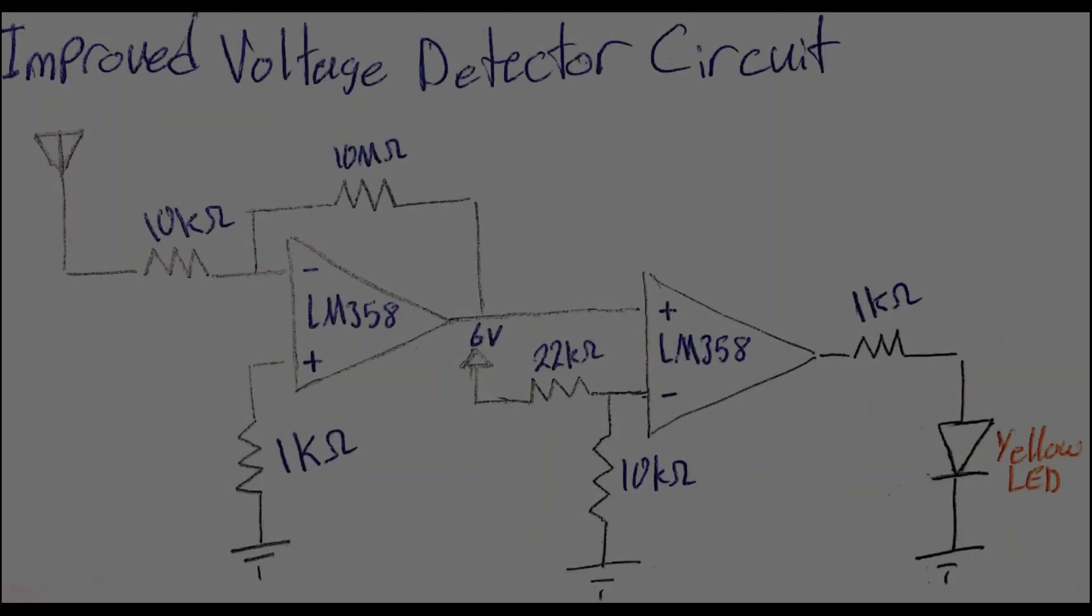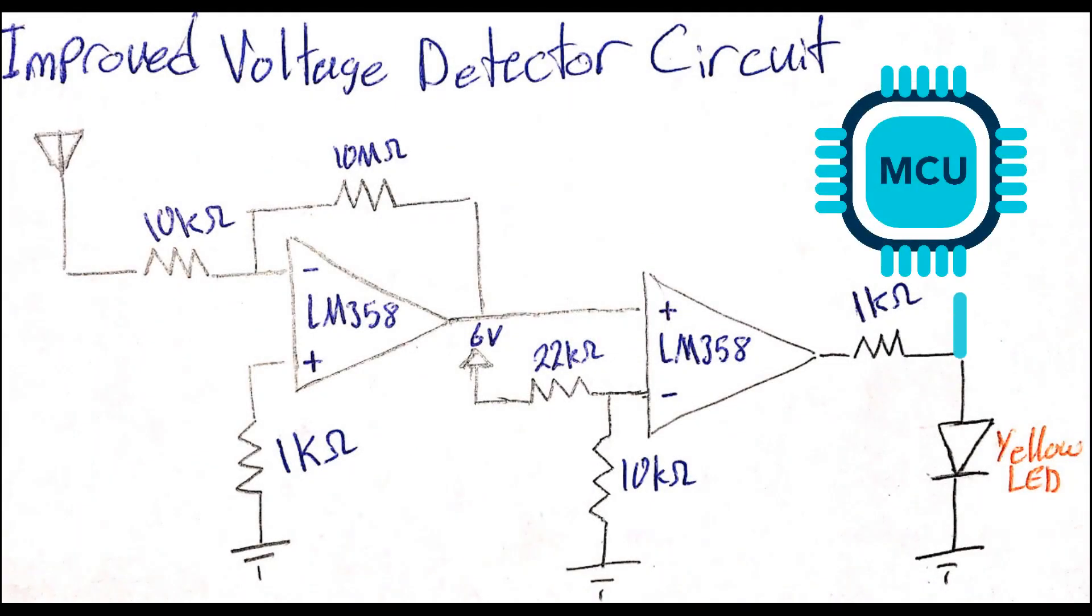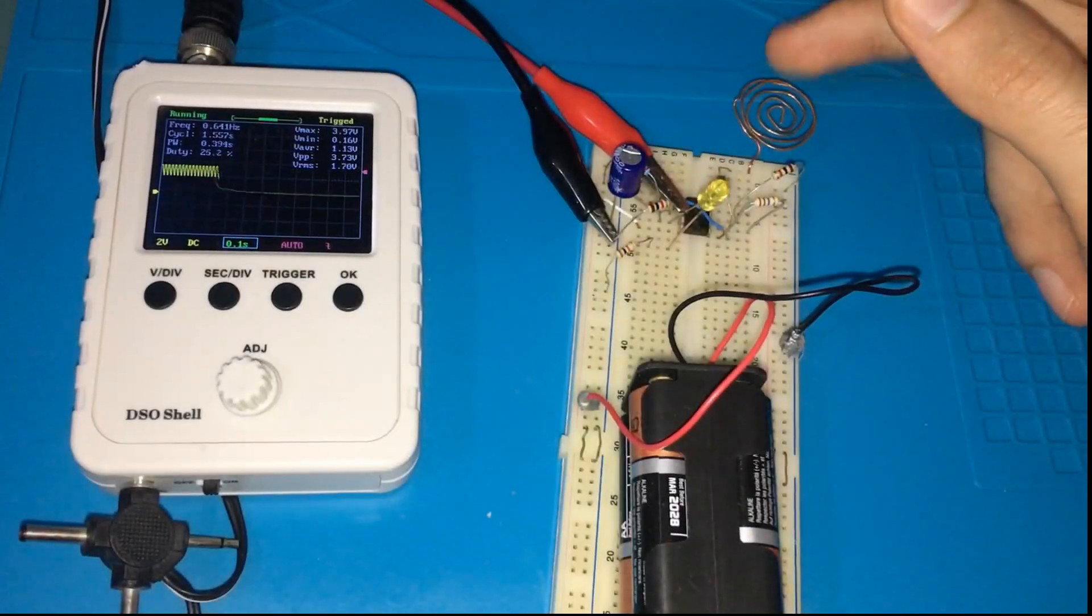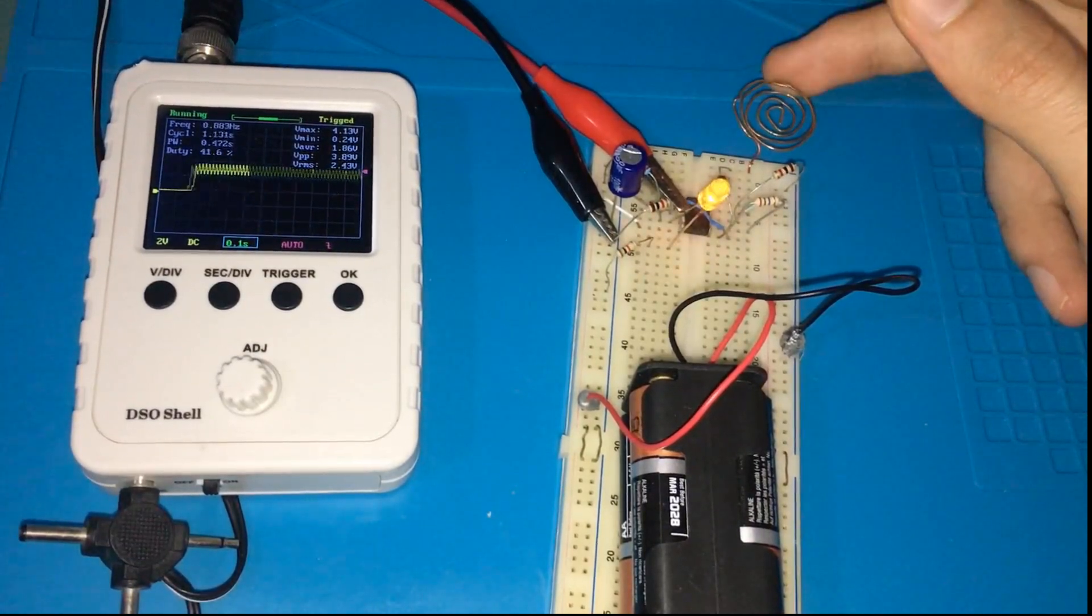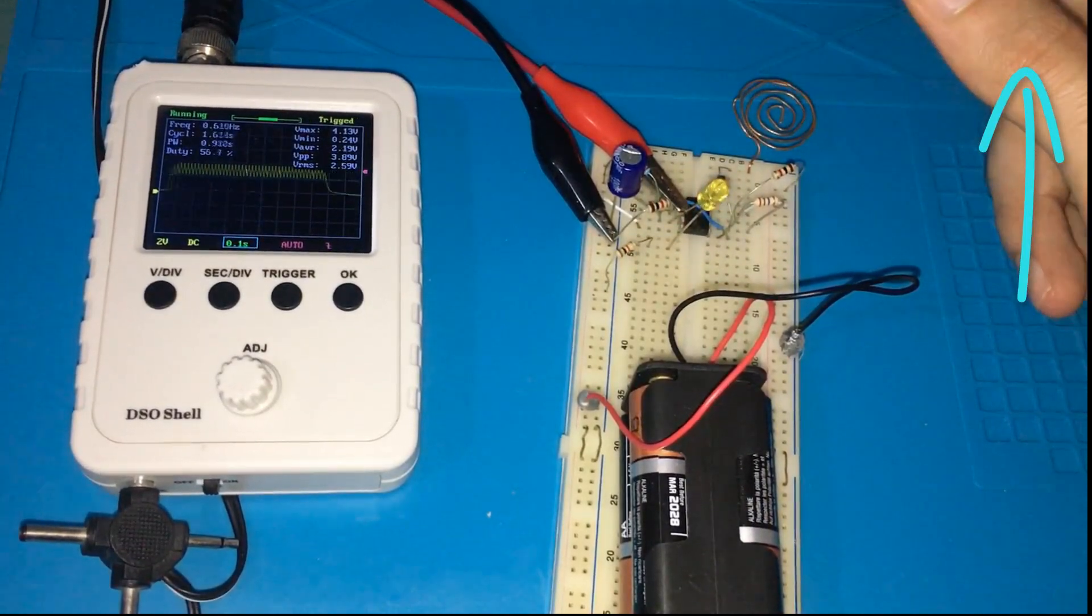If you want to connect the comparator output to a GPIO pin of a microcontroller, it's possible to connect a low-pass filter to the comparator output. And here's how the signal looks like after connecting a low-pass filter. If you want to learn more about high-pass filter and low-pass filter design, you can watch RC filter design episode from the card shown above.